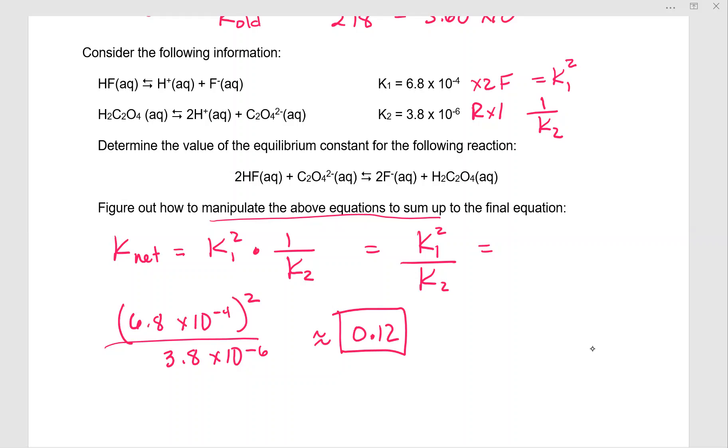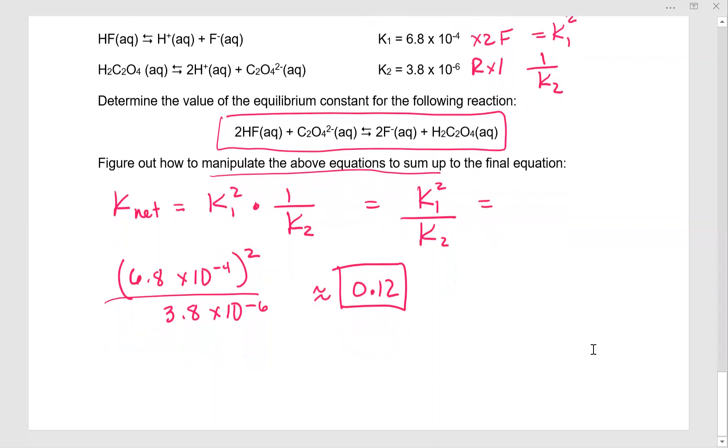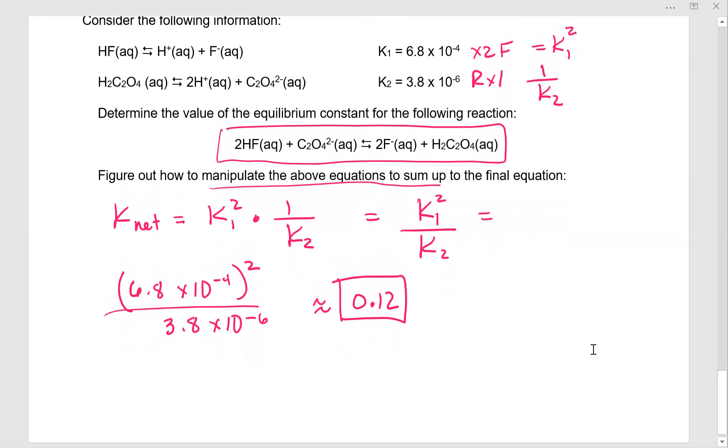This is more likely to be found on the free response section where you would have to realize that you need to go back, manipulate the equations so that they add up to your net equations. So we are done with manipulating K, which means we can go off to bigger and better things.